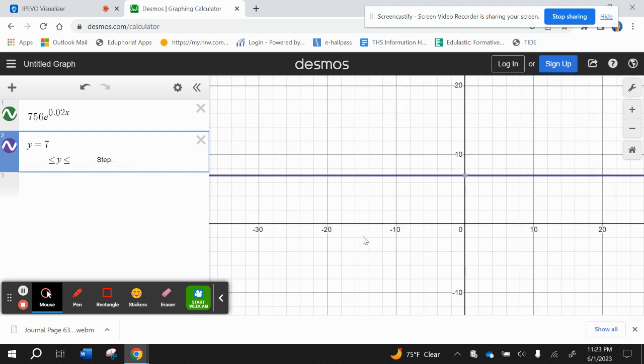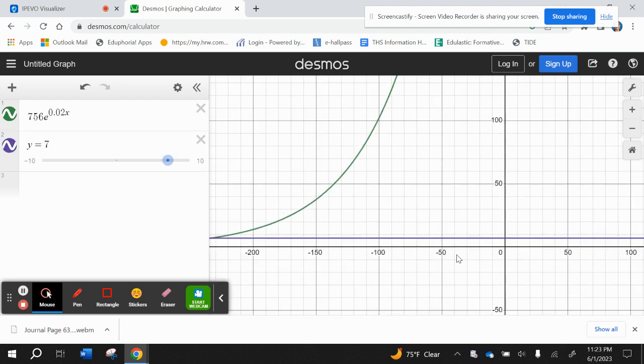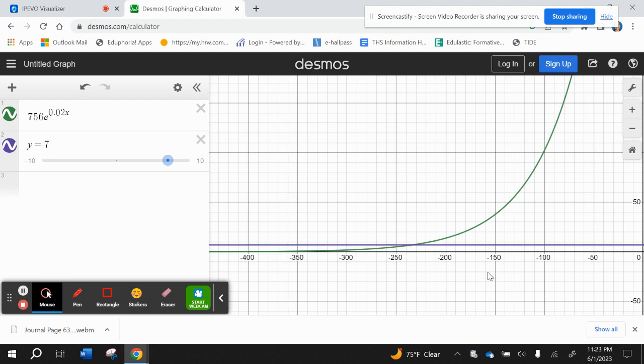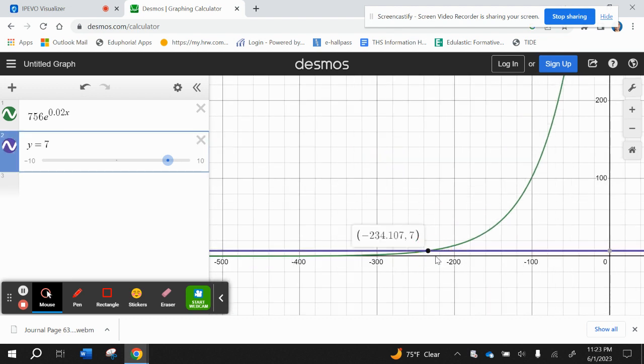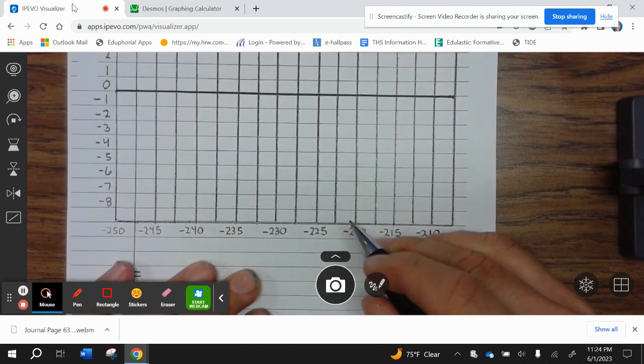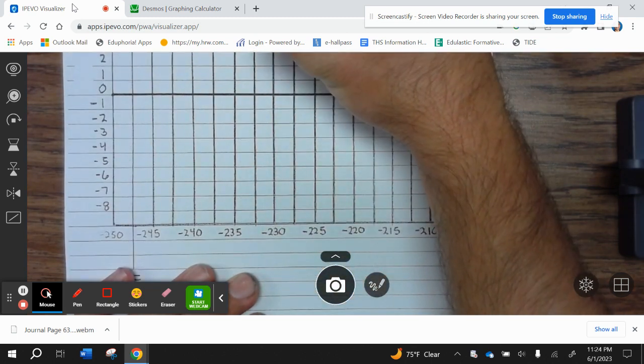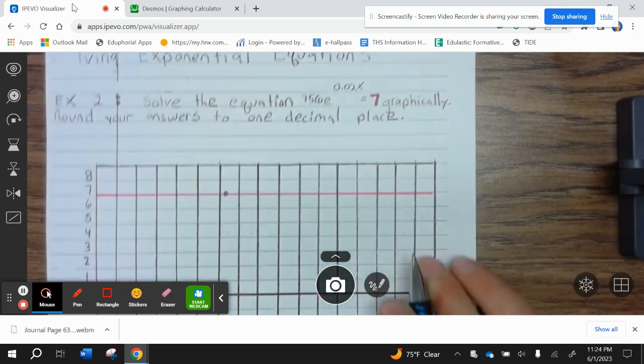We need to zoom out. I think I'm missing something here. Nope, the graph is just way over here. So our intersection is negative 234.1. Negative 234 is, if we look right here, about right here. So our point of intersection would be here.